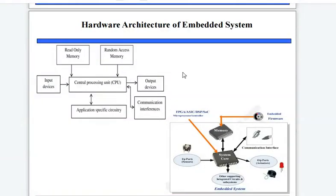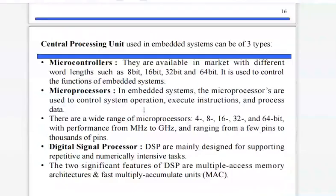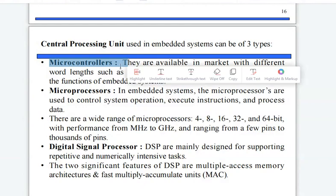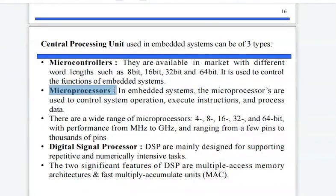The figure shows the hardware architecture of embedded systems. It consists of a Central Processing Unit, input devices, output devices, memories such as RAM and ROM, communication interfaces such as UART and Ethernet, CAN and LAN, and application-specific circuitry. The CPU used in embedded systems can be of three types: microcontrollers, microprocessors, or digital signal processors.